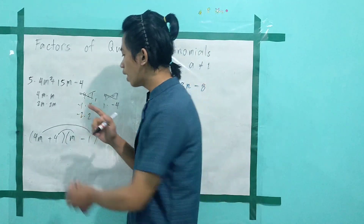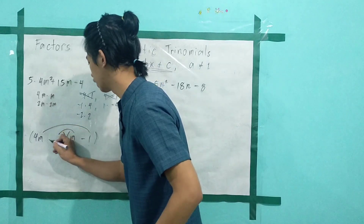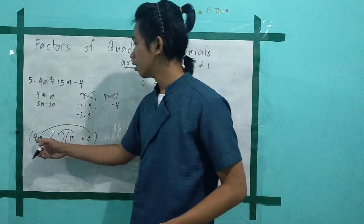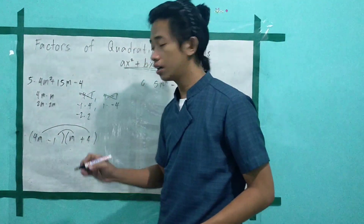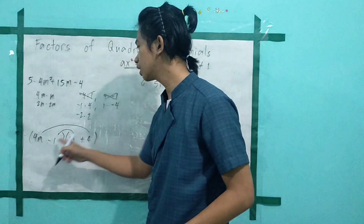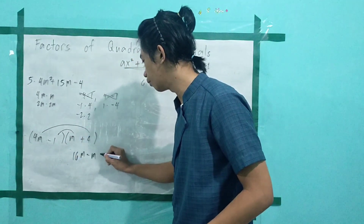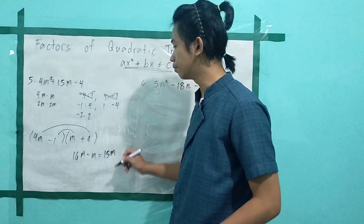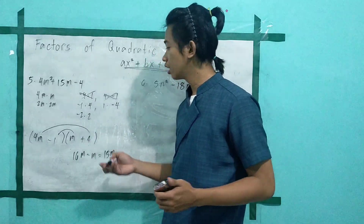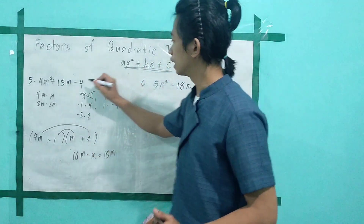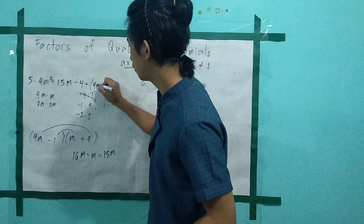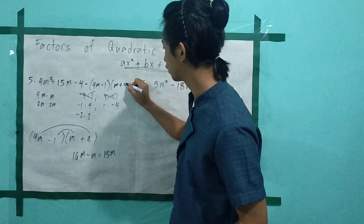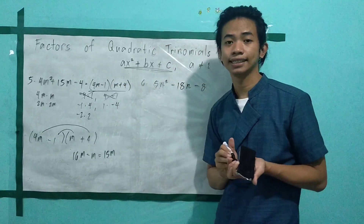Try (4m − 1)(m + 4): 4m times 4 gives 16m, and negative 1 times m gives negative m. Their sum is 16m minus m, which equals 15m. Same as our middle term? Yes. Therefore, the factors are (4m − 1)(m + 4).